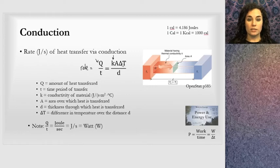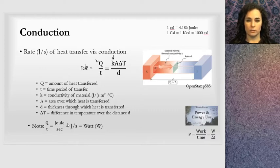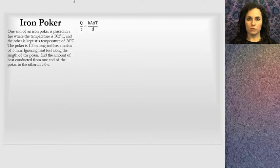Finally, there's the delta T term. There's a hot temperature and a cold temperature, and this will be the positive difference of those two values. Note that Q over T is joules over second, an amount of energy over time, which we know is also a watt.